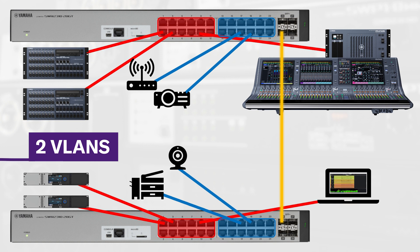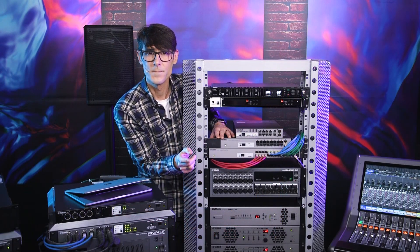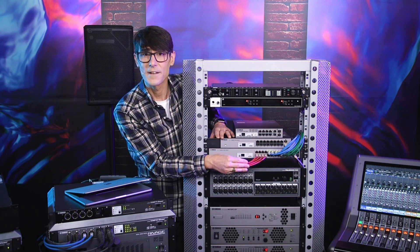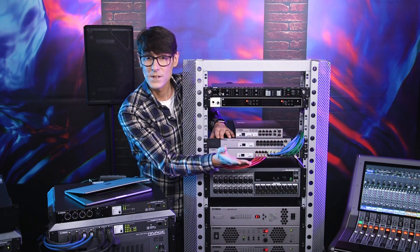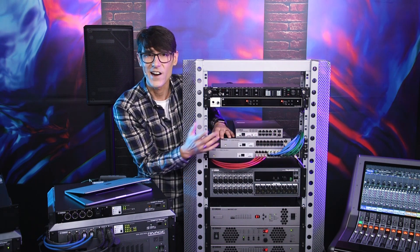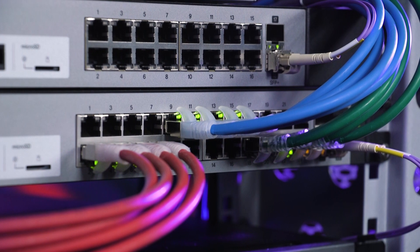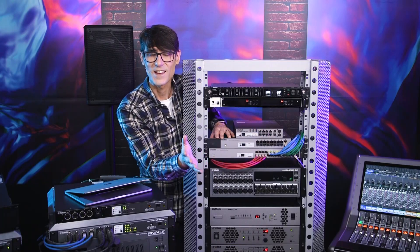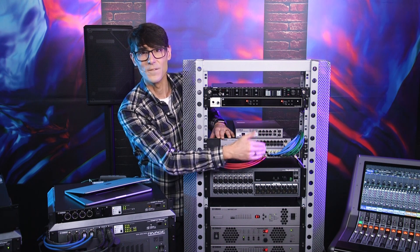It means networks can be shared by several groups of devices without them interfering with each other, so long as the total available bandwidth isn't exceeded. You could use one VLAN for Dante devices and another VLAN for the control of lighting equipment, video, or general office IT. Each port on a switch gets assigned to a particular VLAN, and ports used to link with other switches can be programmed to carry multiple VLANs simultaneously, without data crossing over to the wrong device group.